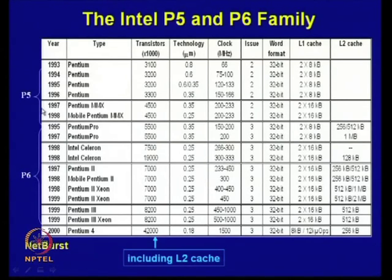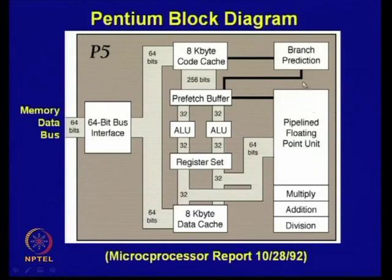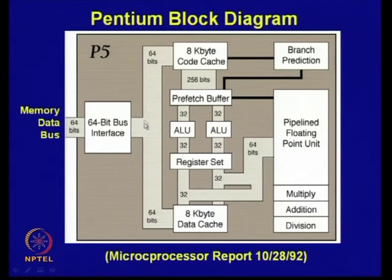This is how the P5 and P6 processors evolved from 1993 to 2000. This is the internal architecture of Pentium P5. You can see the floating point unit is built in, and this is the bus interface unit which interfaces with memory and I/O devices. The internal bus is 64-bit, and the external bus is also 64-bit in the case of Pentium.